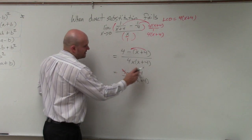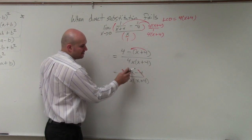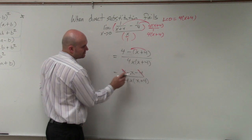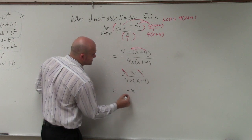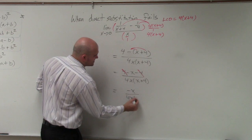What we notice here is the 4 and the negative 4 divide out. So therefore, that's just going to leave me with a negative x over 4x times x plus 4.